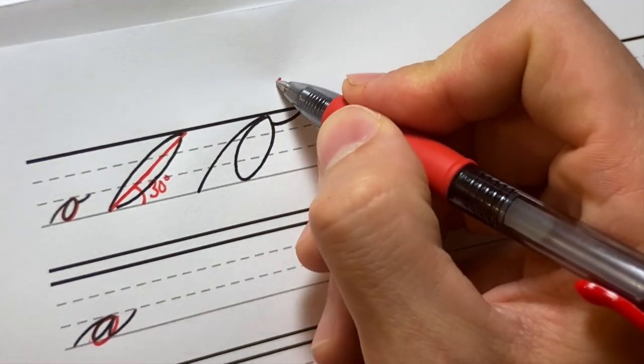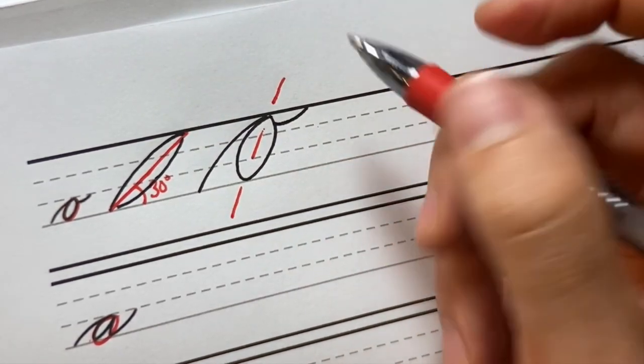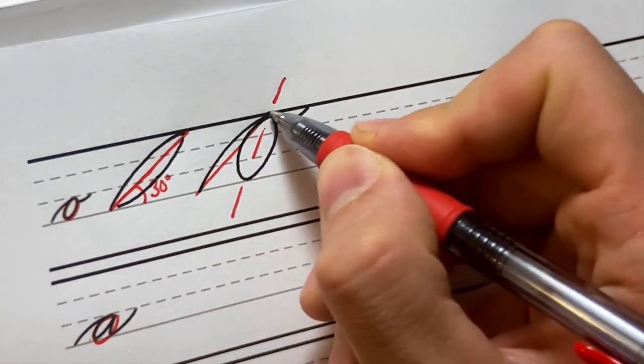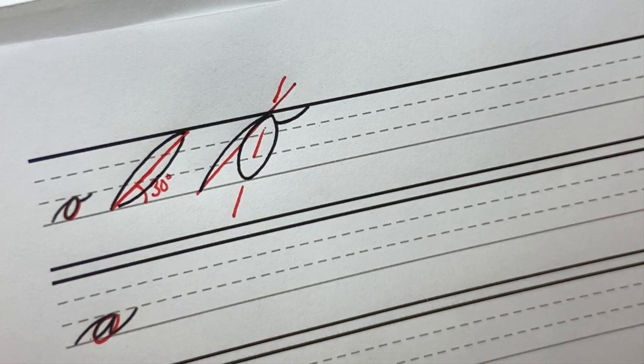And again, our O, the oval itself should be on our main slant, our 60 degrees. And then this connective stroke, this entry stroke is going to be on our connective slant of 30 degrees.